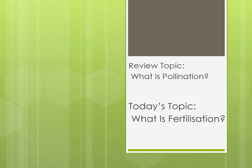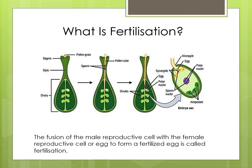Today's topic is: what is fertilization? Kindly refer to page number 63. This diagram shows what happens immediately after pollination. In this diagram, you can see on the left side the first diagram, which shows each pollen grain that has landed on the stigma develops a tiny tube called a pollen tube.